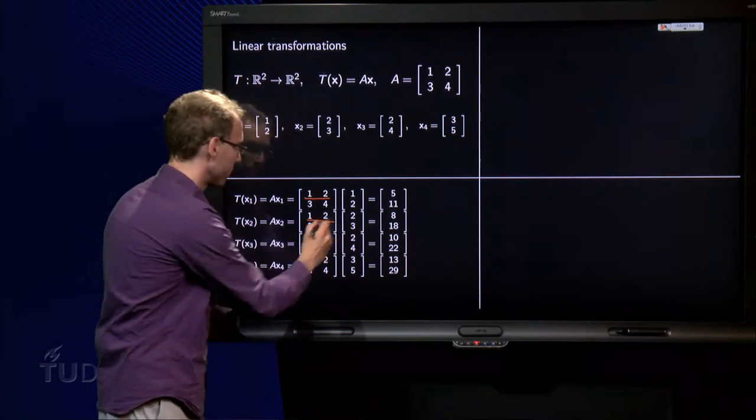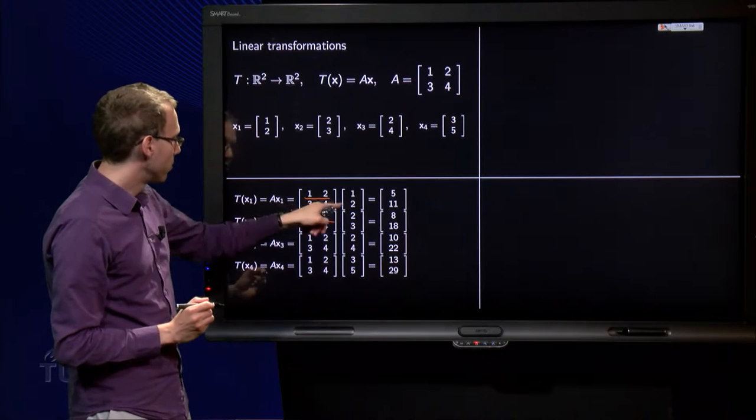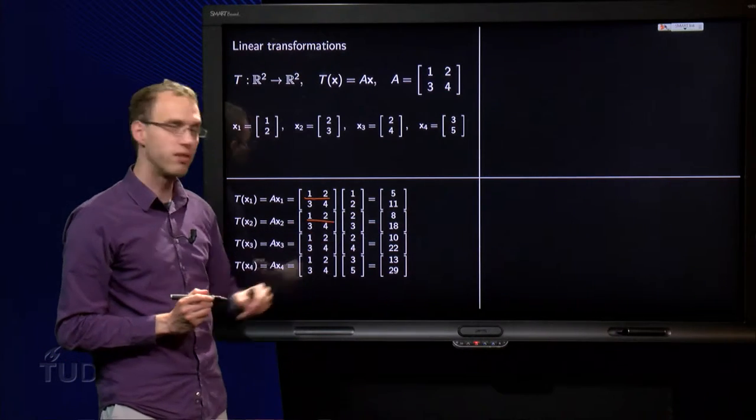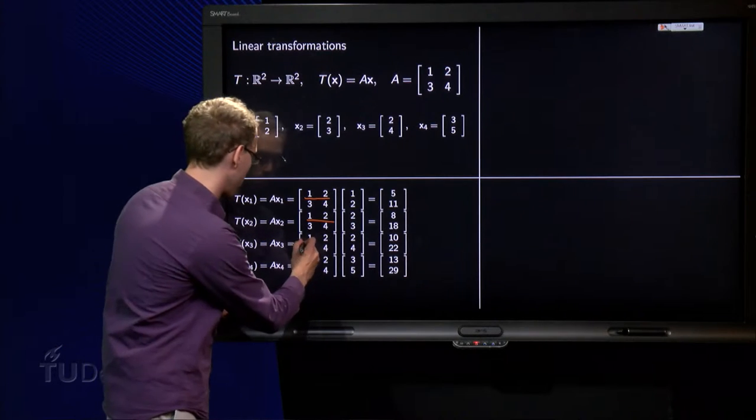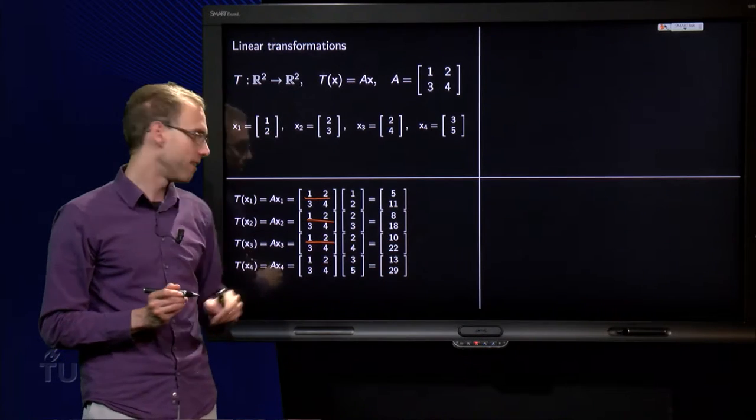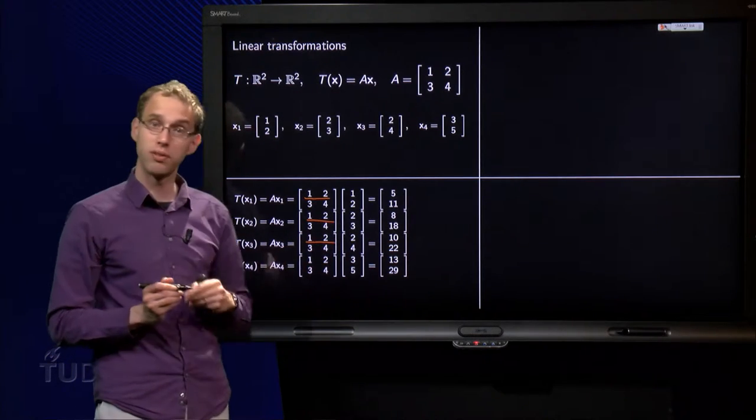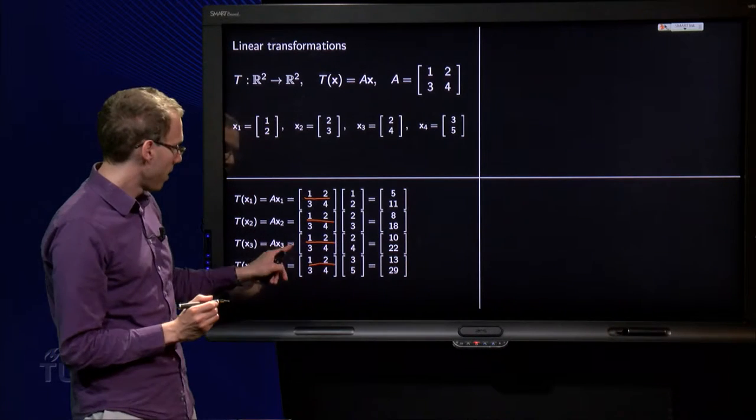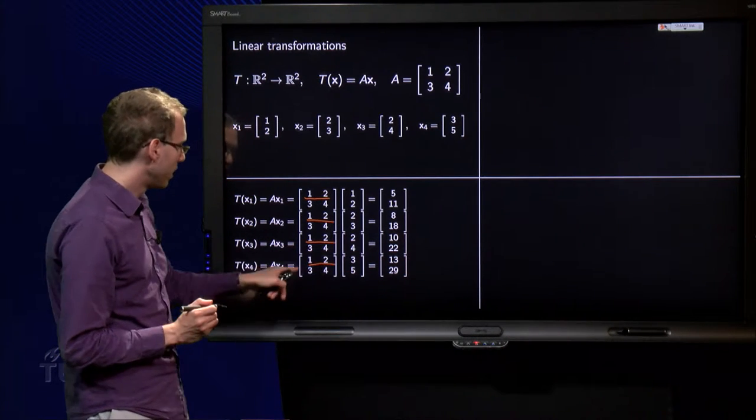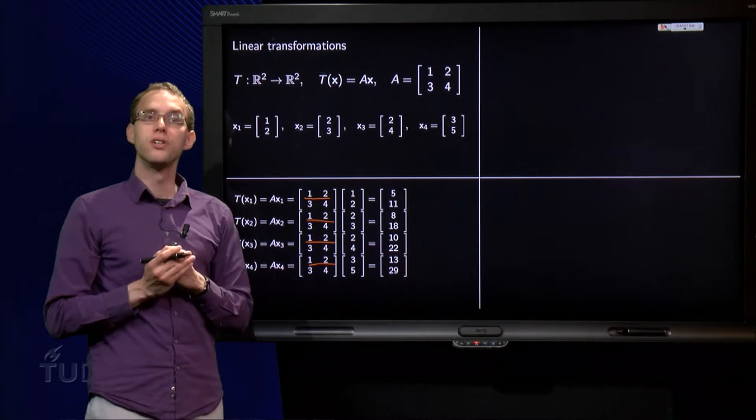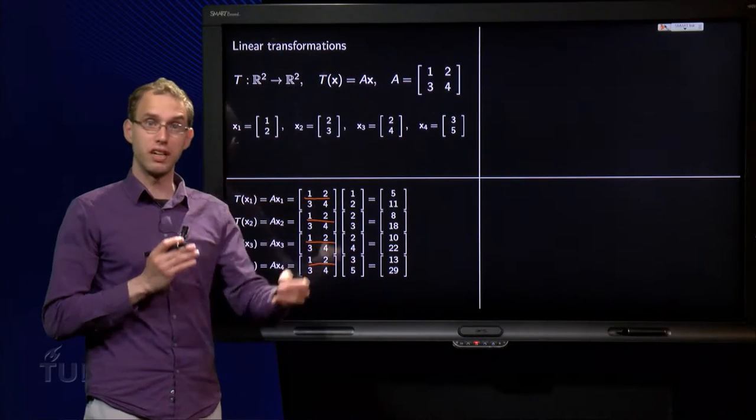The second one, we find 2 plus 6 equals 8, and 6 plus 12 equals 18. Image of x3: 2 plus 8 equals 10, and 6 plus 16 equals 22. And then the last one, 3 plus 10 equals 13, and 9 plus 20 equals 29. So there we have the images of x1 up to x4.